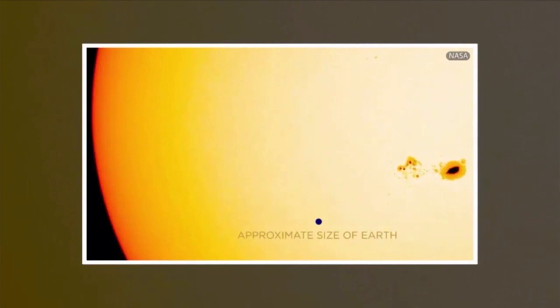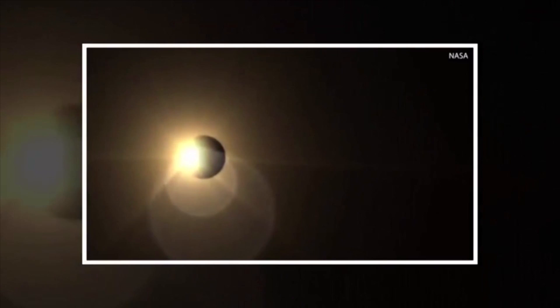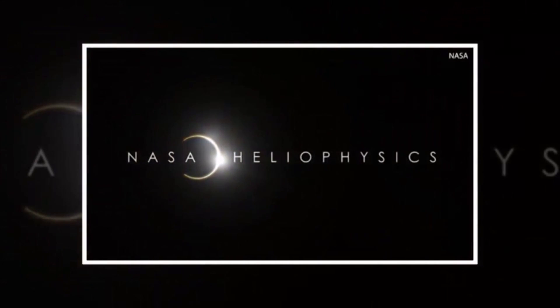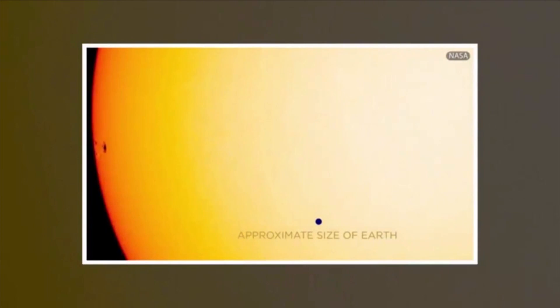In a statement, NASA said, a new sunspot group has rotated into view and seems to be growing rather quickly. It is the first sunspot to appear after the Sun was spotless for two days, and it is the only sunspot group on the Sun at this moment. It could be the source for some solar flares, but it is too early to predict just what it will do.